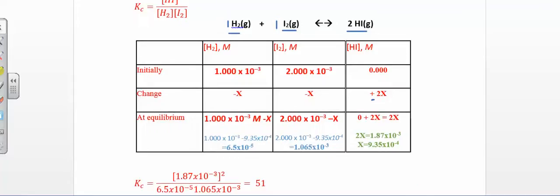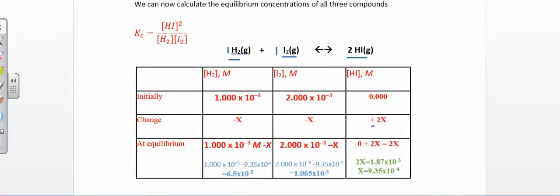On the equilibrium row, it's whatever I started with minus or plus my change. Initial concentration of H₂ minus x, initial concentration of I₂ minus x, and initial concentration of HI plus 2x. Going back to the question, they tell me that at equilibrium the product concentration is 1.87×10⁻³ M — that's what I can measure experimentally, and it equals 2x. So 2x = 1.87×10⁻³; dividing both sides by 2 gives x = 9.35×10⁻⁴.